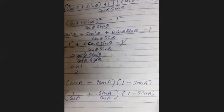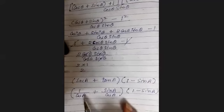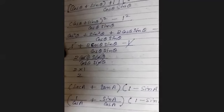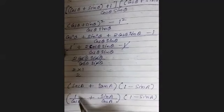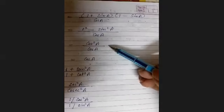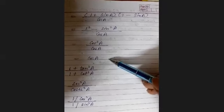Next: (sec A + tan A)(1 - sin A). We change everything to sin and cos. Sec A + tan A = 1/cos A + sin A/cos A = (1 + sin A)/cos A. Multiplying by (1 - sin A): (1 + sin A)(1 - sin A)/cos A. Applying a² - b², we get (1 - sin²A)/cos A = cos²A/cos A = cos A.